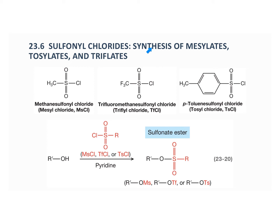Continuing in this chapter, we look at sulfonyl chlorides with the synthesis of mesylates, tosylates, and triflates. Mesyl chloride (methane sulfonyl chloride) has a methyl group attached. Triflyl chloride is trifluoromethane sulfonyl chloride with fluorines. Paratoluene sulfonyl chloride, also known as tosyl chloride (abbreviated TosylCl), is the one seen most frequently — sometimes used as a protecting group.